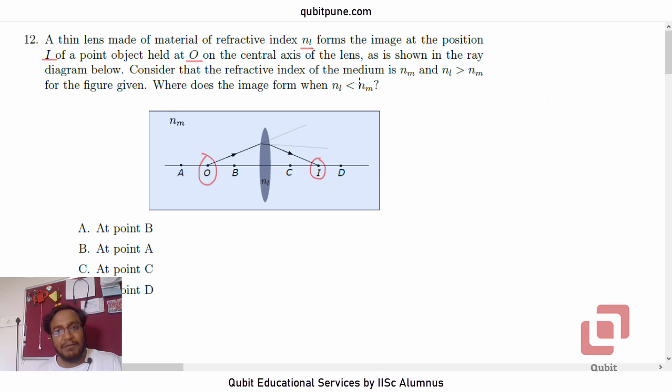Consider that the refractive index of the medium is Nm and NL is greater than Nm for the figure given. Where does the image form when NL is less than Nm, where these are the refractive indices.